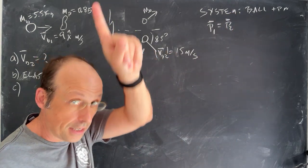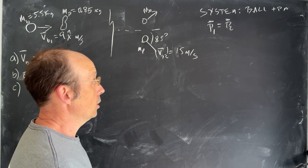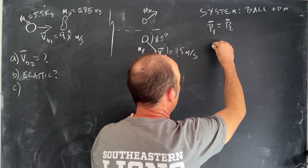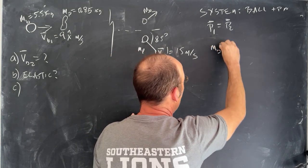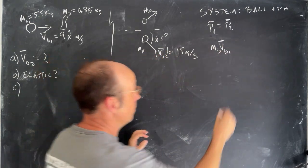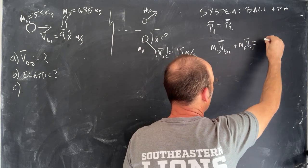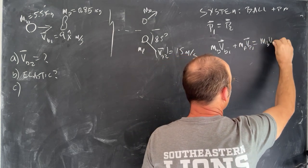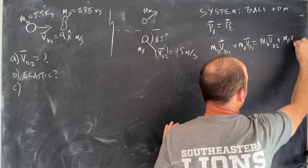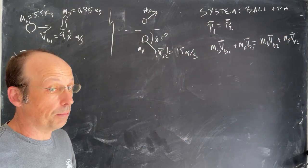So that's the initial momentum equal to the final momentum. Let's write that out as a vector. The initial momentum is the mass of the ball times the velocity of the ball before the collision, plus the mass of the pin times the velocity of the pin before the collision. That equals the mass of the ball times the velocity of the ball after the collision, plus the mass of the pin times the velocity of the pin after the collision. Notice those are all vectors, and that is important.